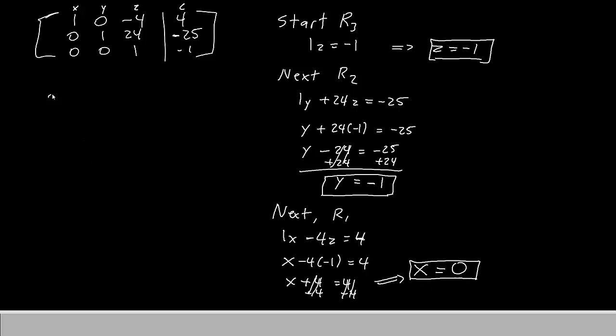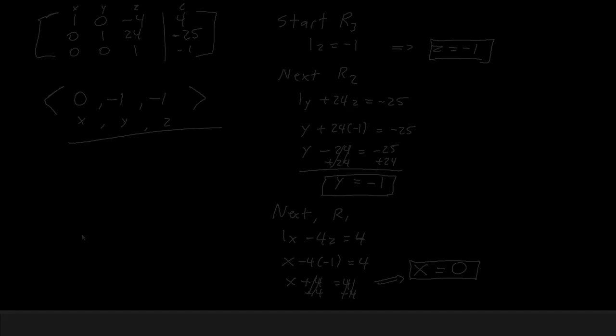So our answer to this will be inside of angular brackets. We'll list x, y, z. So we'll have 0, minus 1, minus 1. And there you have it. That's how you solve a 3-row matrix. Thank you for watching. We'll see you again next episode.